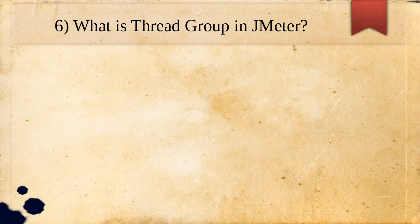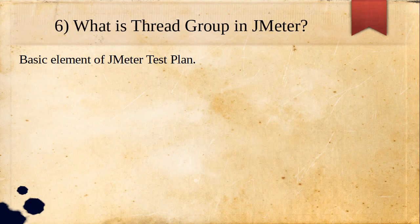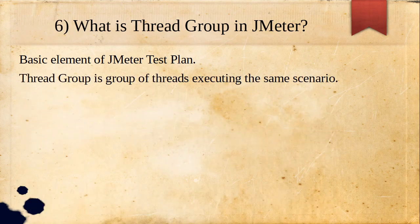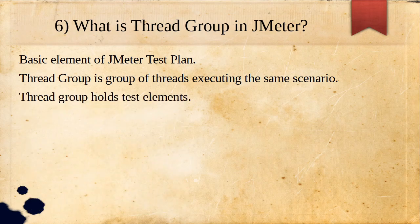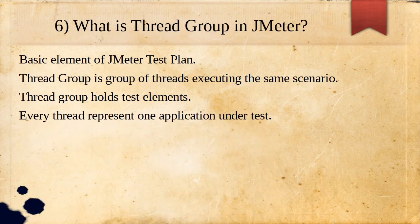Sixth question: what is a thread group in JMeter? It is the basic element of a test plan. When you go to the test plan and right-click, the first thing we do is create a thread group. A thread group is a group of threads executing the same scenario — by threads we mean users. It holds all test elements: samplers, listeners, configuration elements — everything is inside the thread group. Every thread represents one application user under test.